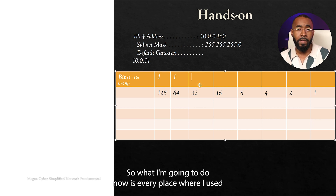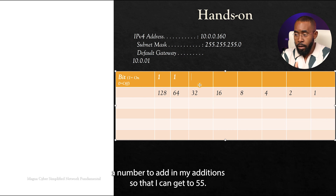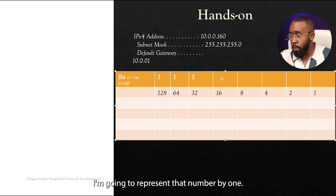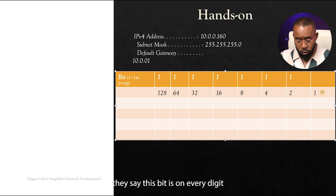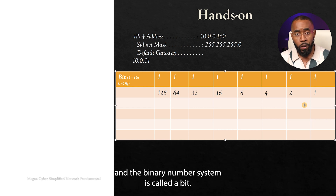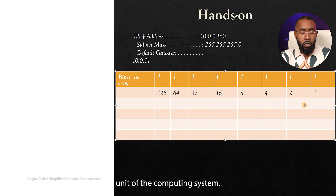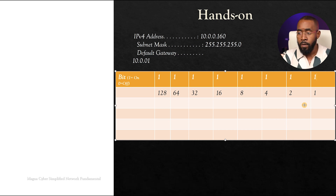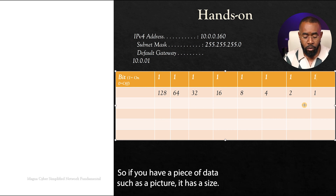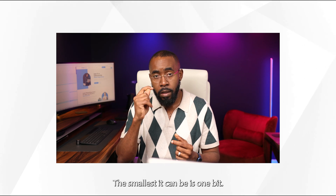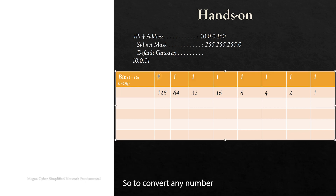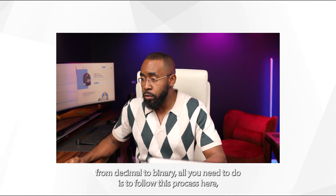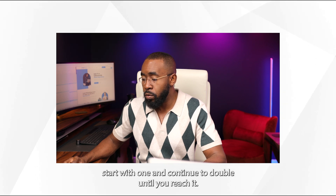Every place where I used a number in my addition to get to 255, I'm going to represent that position with a one. There is a term for that in the binary number system: whenever a digit is one, they say this bit is on. Every digit in a binary number system is called a bit — that's the smallest unit of the computing system. In the computing world, the smallest amount of data is one bit. To convert any number from decimal to binary, all you need to do is follow this process: start with one and continue to double until you reach eight times, ending at 128.